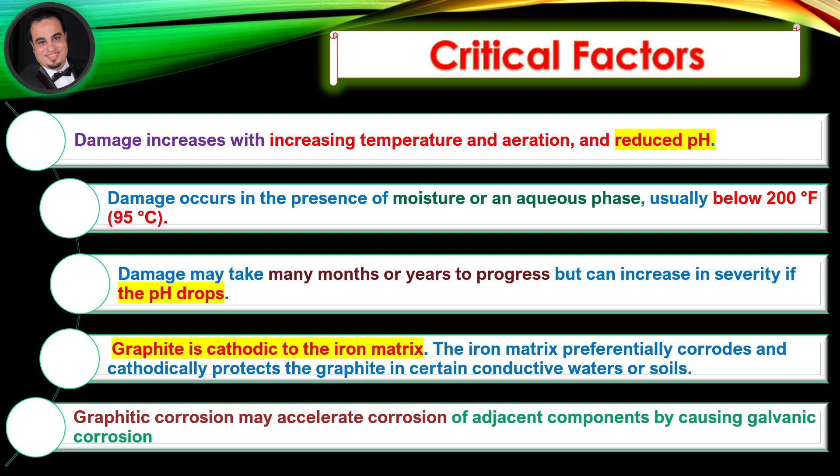Graphite is cathodic to the iron matrix. The iron matrix preferentially corrodes and cathodically protects the graphite in certain conductive waters or soils. Graphitic corrosion may accelerate corrosion of adjacent components by causing galvanic corrosion.